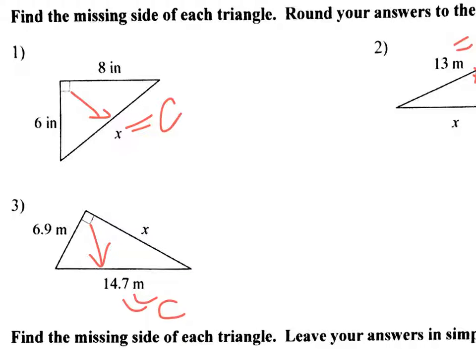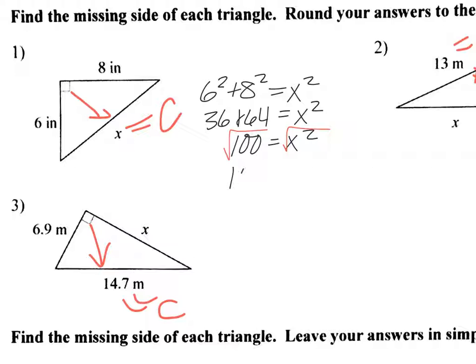Okay, so in this particular case, remember C is always by itself in the formula. So we have 6 squared plus 8 squared equals x squared. It doesn't really matter which one you say is A and which one is B. So then that's 36 plus 64 equals x squared, which is 100. So then we take the square root of both sides, and we get x is 10.